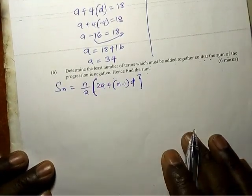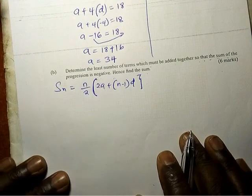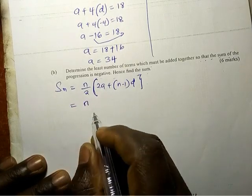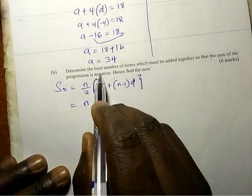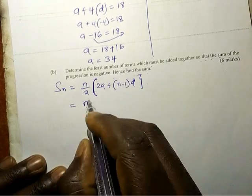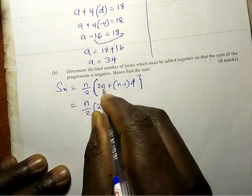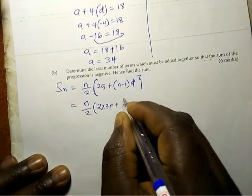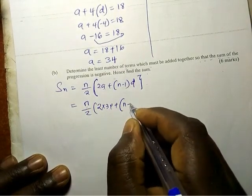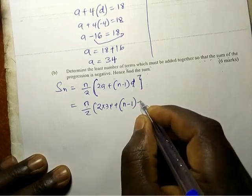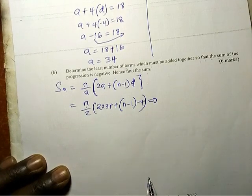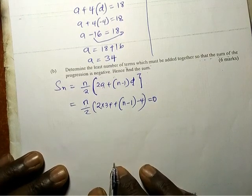We know that. So we want the sum that will give us a negative number, right? So n, we don't know the number of terms. We are looking for the number of terms that will give us the negative number. So n over 2 into 2 times a, but we know a is 34, plus into n minus 1 times d, which is negative 4. The answer is less than 0. We want a number which is negative.